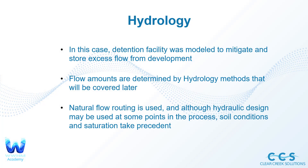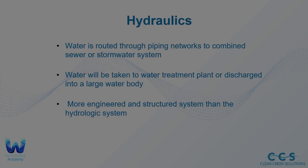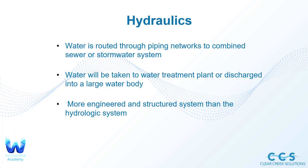In the hydrology case, the detention facility was modeled to mitigate and store excess flow from a development. If it rained on a development, gravity would naturally drain that water to the detention facility. The flow amounts are determined by hydrology methods we'll cover shortly, and natural flow routing is used — the soil conditions and saturation take precedent over what's occurring in the natural environment. In hydraulics, water is routed through piping networks to a combined sewer or stormwater system, then taken to a water treatment plant or discharged into a larger water body. These are more engineered and structured systems than hydrologic systems, which rely more on natural processes.